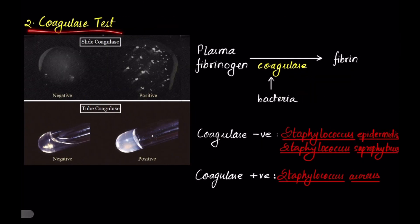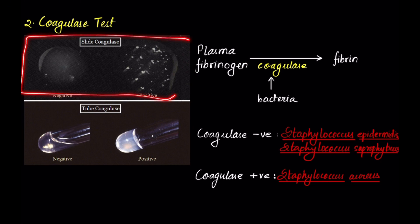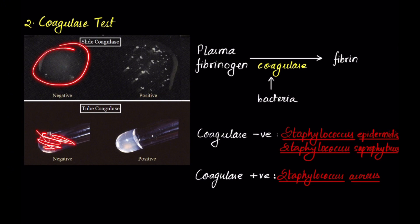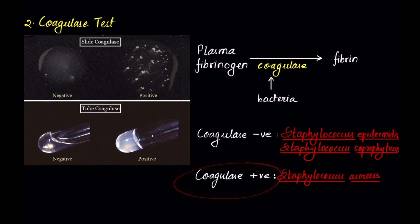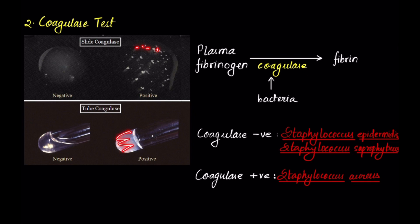Second is the coagulase test. In the coagulase test, the reagent used is plasma fibrinogen, and this test can be done either on a slide or in a test tube. Bacteria is inoculated into the plasma fibrinogen. If the bacteria produces coagulase enzyme, then plasma fibrinogen is converted to fibrin. This fibrin is visible either in the form of clumps on a slide or a clot in a tube.